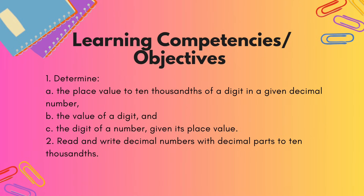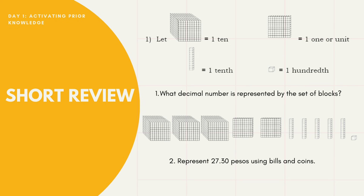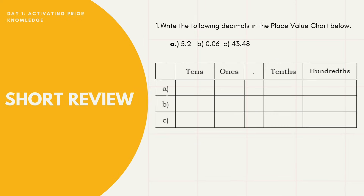Let's have our short review. A set of blocks will be equal to ten, one block is equal to one unit, the third figure is equal to one-tenth, and one cube is one-hundredth. So what decimal number is represented by the set of blocks? Also, represent 27.30 pesos using bills and coins — you can have a 20-peso bill, one 5-peso coin, one 1-peso coin, and three 10-centavo coins. That represents 27.30 pesos.